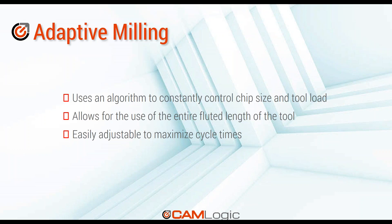The way it works is it uses an algorithm to constantly analyze the amount of material coming off — easing into the material, and once it gets up to full load it maintains that until it has to wrap to the next motion. You can use the whole flute length of the tool — you paid for it, so why not use it.